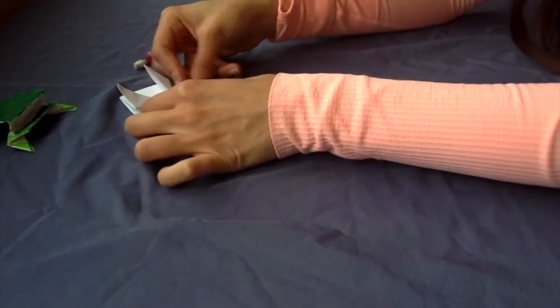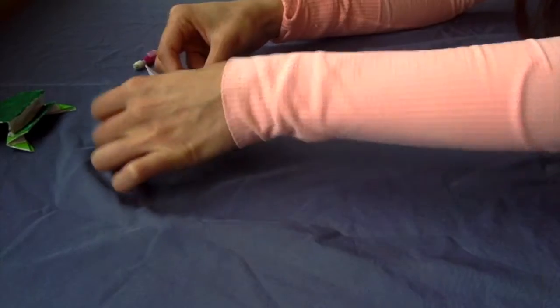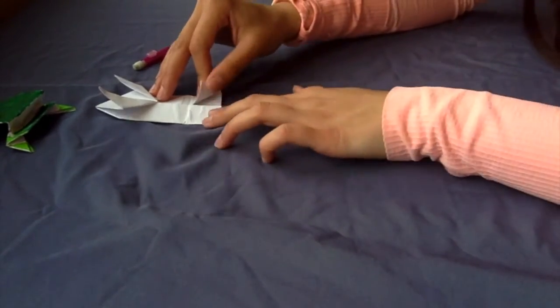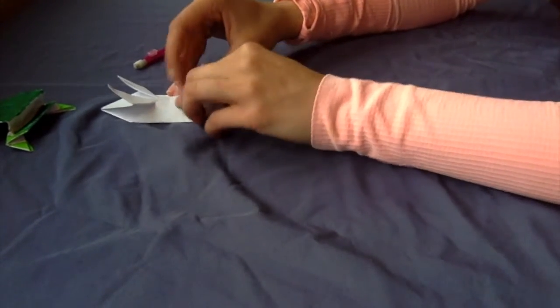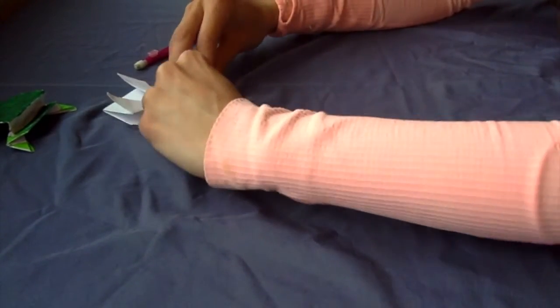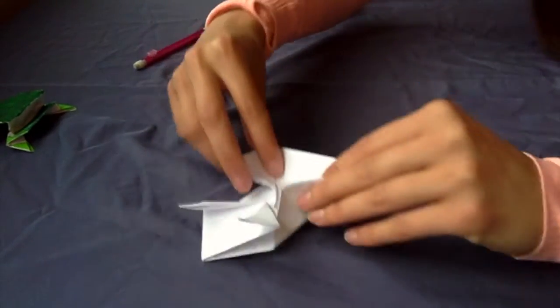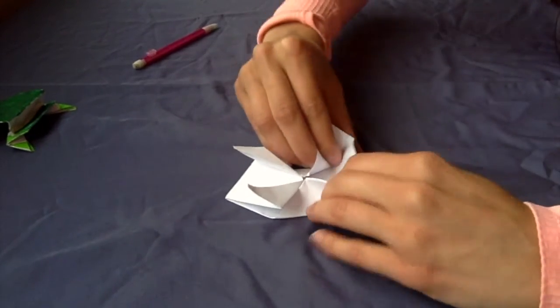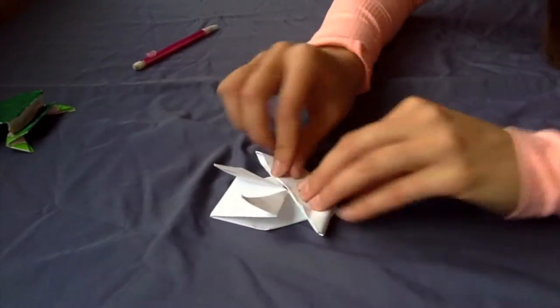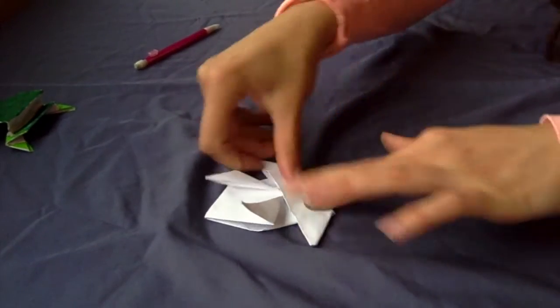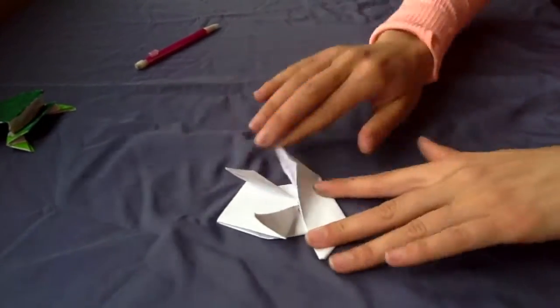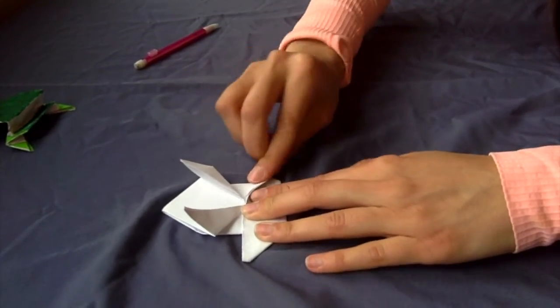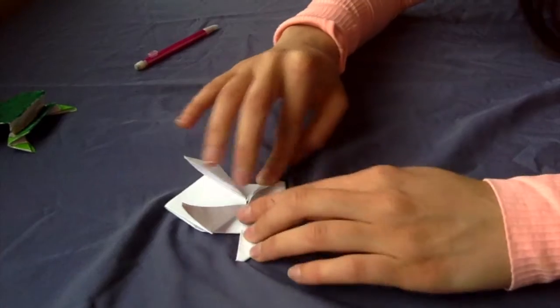So once you have this, we're going to unfold this and we're going to take these inside flaps and open them up while pulling this part up, and we're going to form this kind of shape.